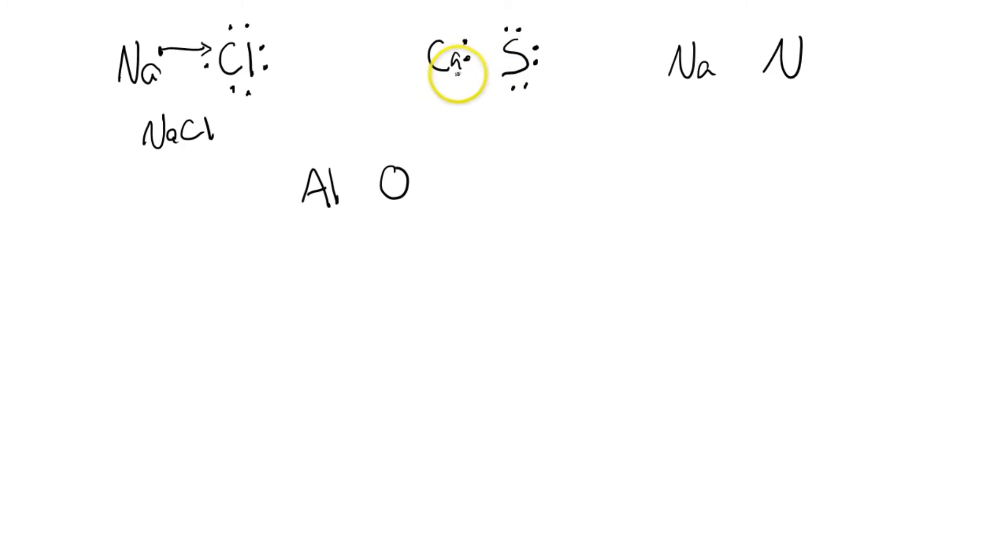Calcium has 2 electrons to give up, so this one is also pretty simple. So we just kind of come right on over, like so. Calcium is now happy because it's given up its 2 electrons. Sulfur is now happy because it now has 8 valence electrons.